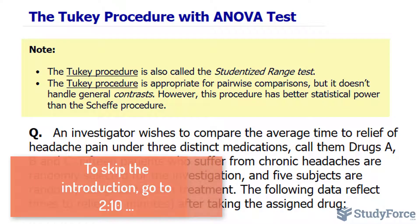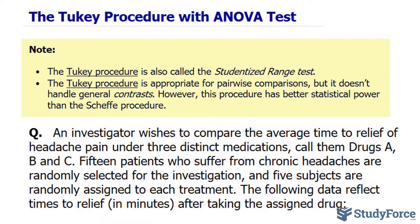The Tukey procedure is also called the studentized range test and it is appropriate for pairwise comparisons, but it doesn't handle general contrasts — that's when you have more complicated comparisons of the means. However, the good thing is that this procedure has better statistical power than the Scheffé procedure, which I've shown you in a previous video.